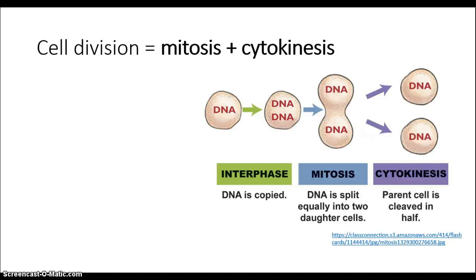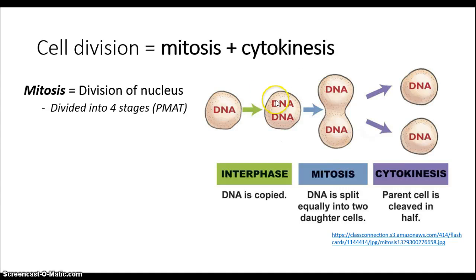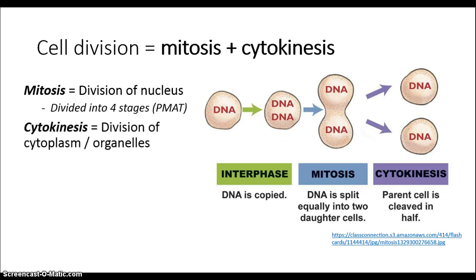Cell division consists of two related phases: the division of the nucleus and its DNA, and the division of everything else in the cell. The nucleus division is known as mitosis, and it consists of four phases — prophase, metaphase, anaphase, and telophase. And cytokinesis is the division of everything else in the cell: the cytoplasm, the organelles, and the cell membrane.